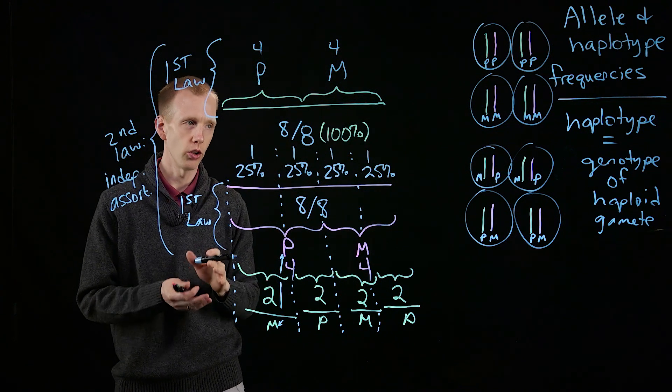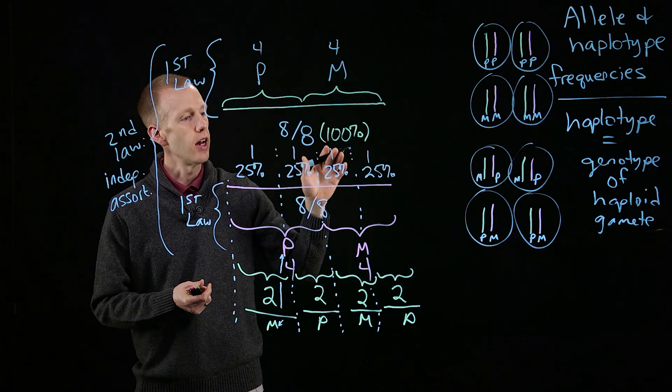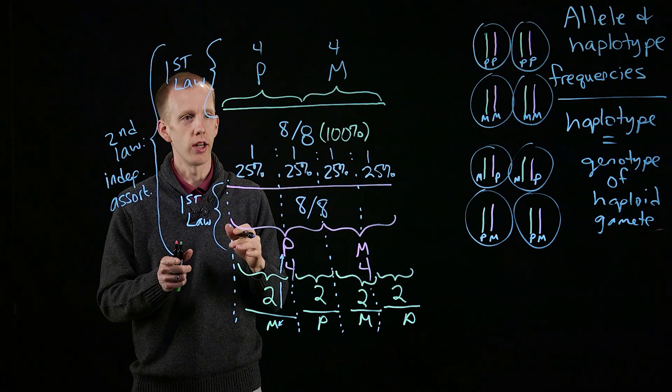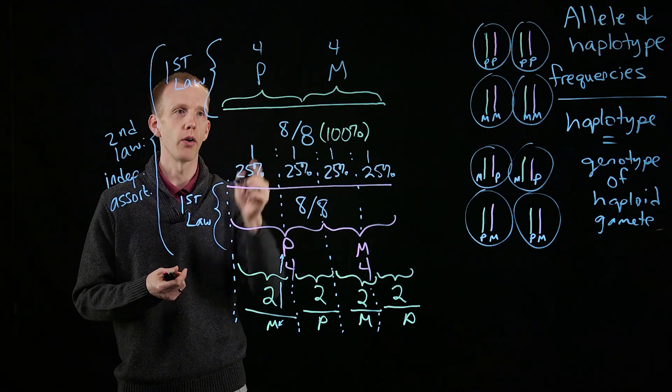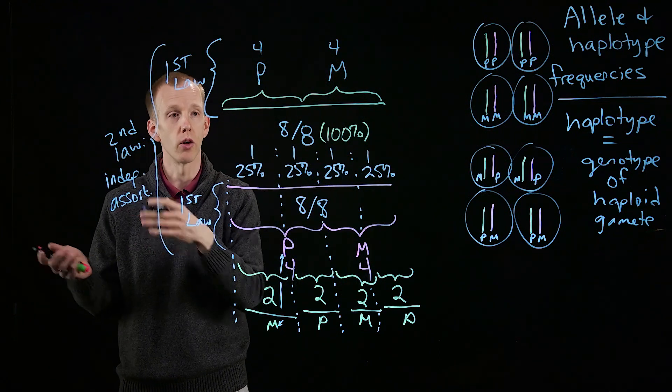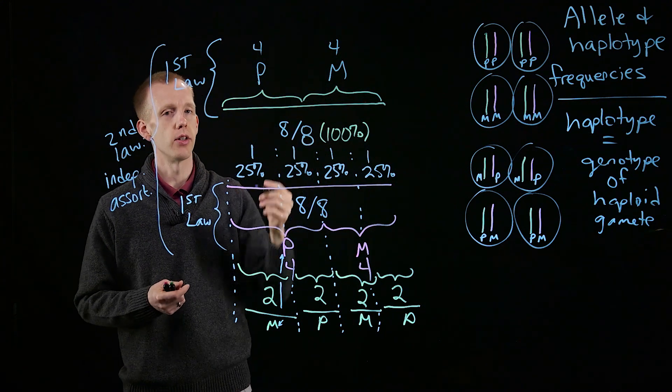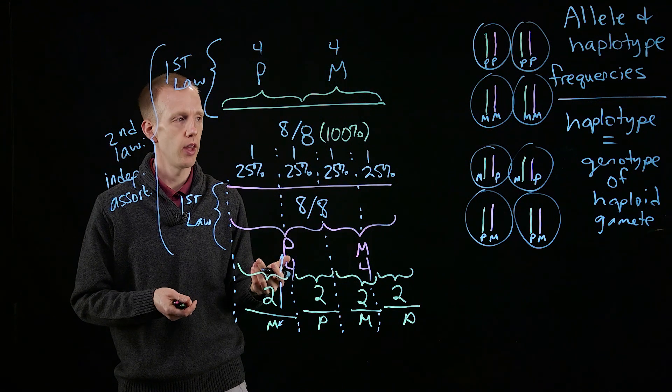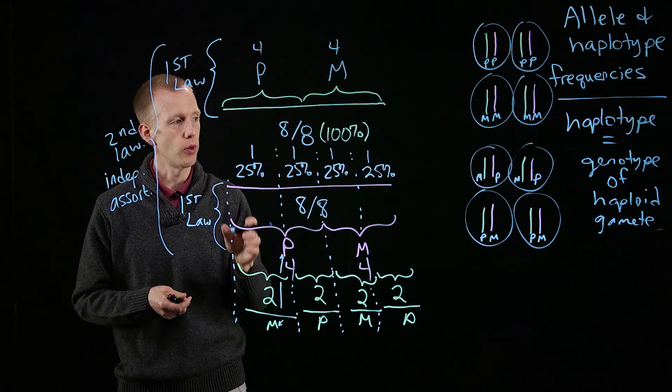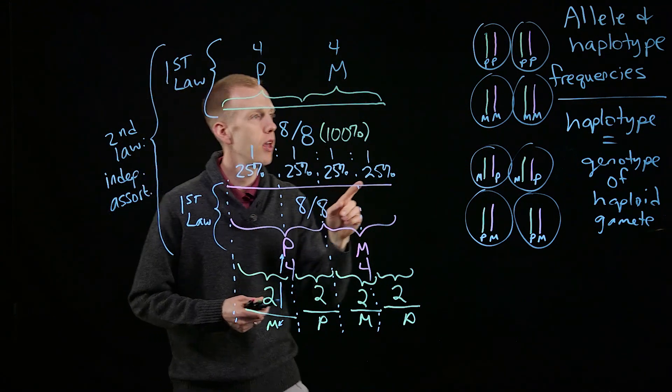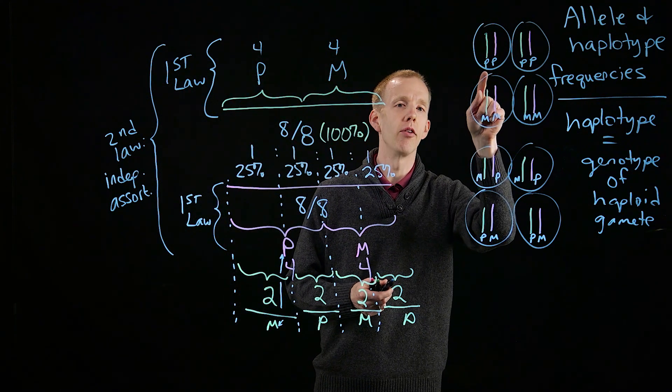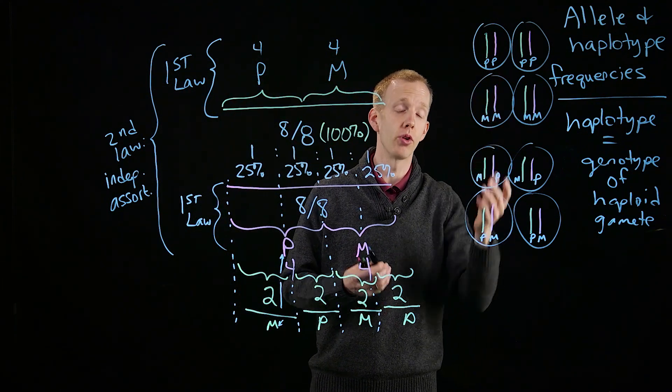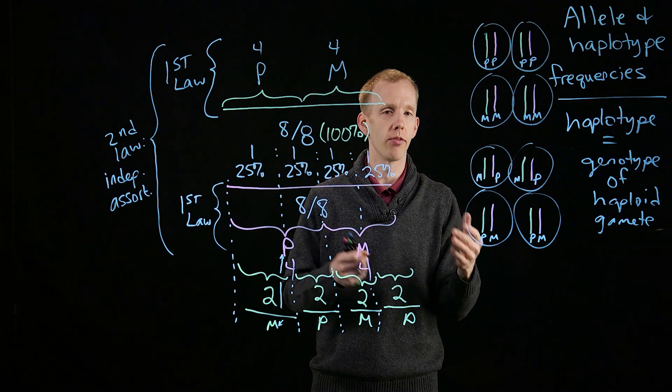So again, to conclude, the allele is a version of a gene. And in this case we're talking about P as the paternal allele, or the paternal version of a chromosome, and M is the maternal version of the chromosome, or maternal allele. And what we're looking at here, when we talk about haplotypes, is the combination of different chromosomes or different genes that are inherited from different individuals.